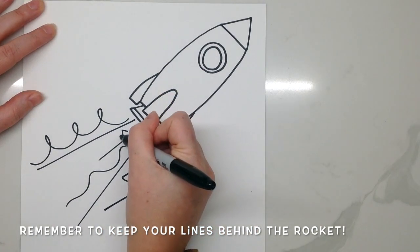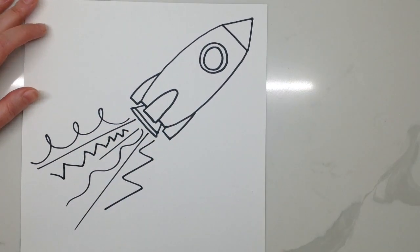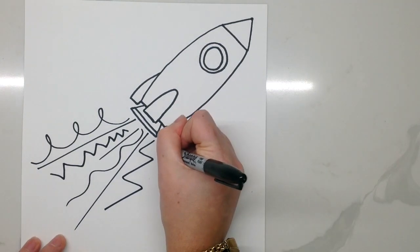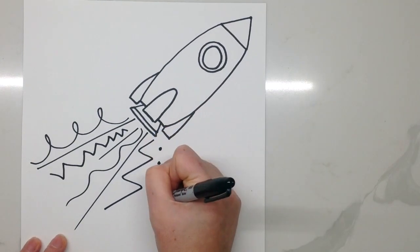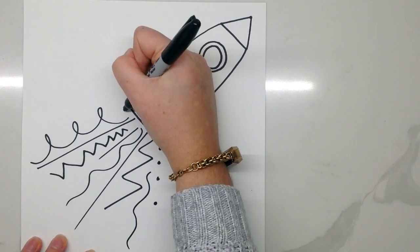Don't forget you can use straight lines, you can also reuse a type of line, or you can incorporate some broken lines, which are dashed lines or dotted lines. You just want to remember to keep your lines behind the rocket.